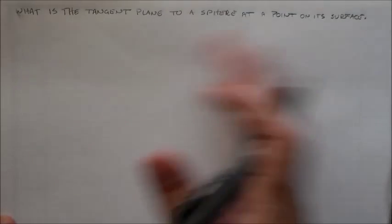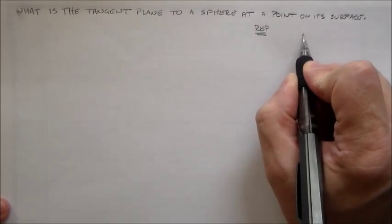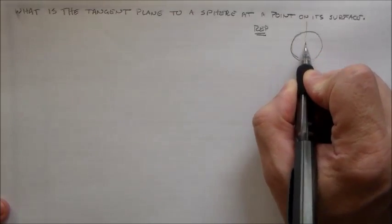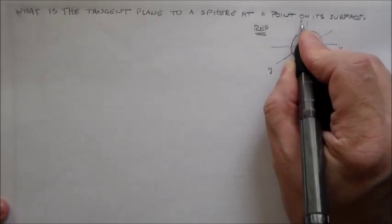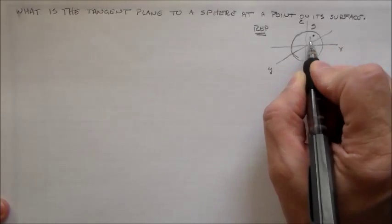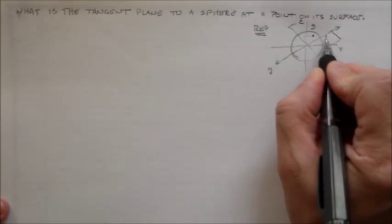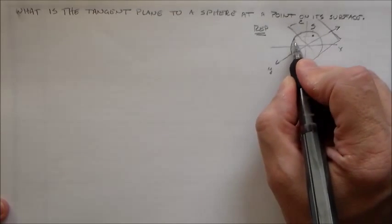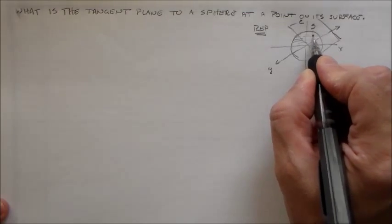I'd like to look at one of these tangent plane problems. I'd like to do something with a sphere, at some point on its surface. I want to find the equation for the tangent plane for a sphere at one point on its surface. I'll draw a plane and that plane will be perpendicular to the sphere — this plane that just touches the sphere right there.